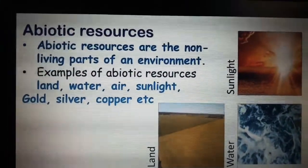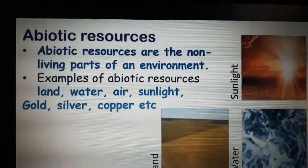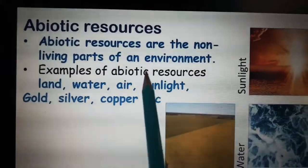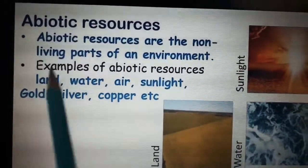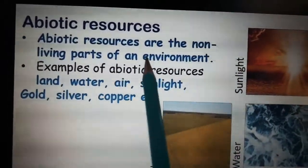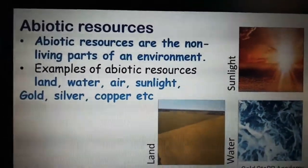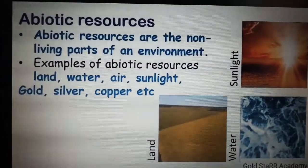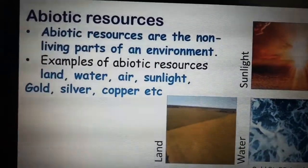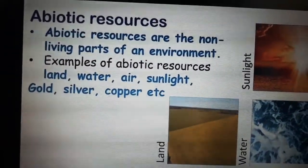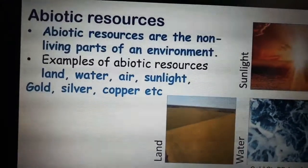Next, what is abiotic resources? Abiotic resources are the non-living parts of an environment. Non-living means things like sunlight, water, and land — those are non-living parts of an environment. For example, land is an abiotic resource.